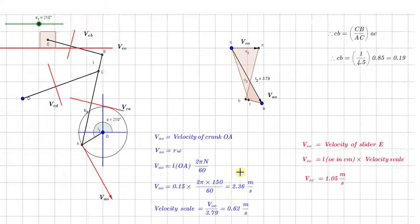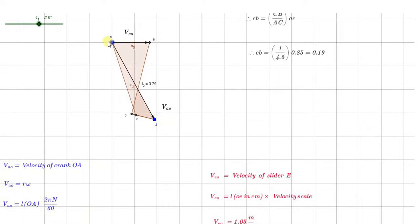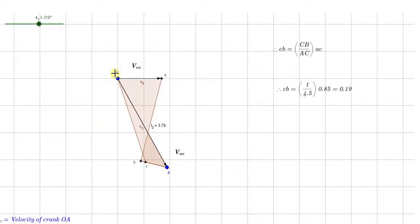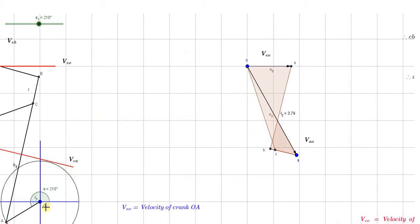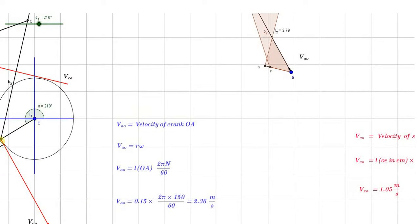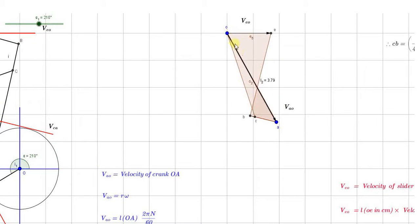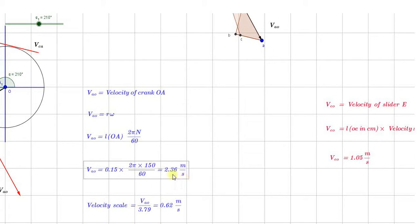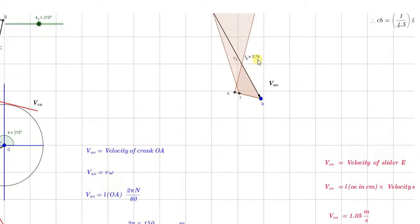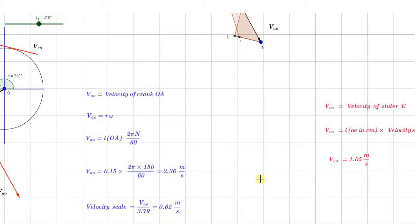This vector we are representing. This is the first vector. On this space diagram, first mark O which is the fixed point of the mechanism. You can mark both O and D over here. Then draw a vector parallel to this particular vector. Suppose we have taken the length of 3.79 cm — you can take any length, 4, 5, or 6 centimeter. So the actual velocity is 2.36 meter per second, represented by a length of 3.79 centimeter. Therefore, 1 centimeter represents 0.62 meter per second. This is the velocity scale.